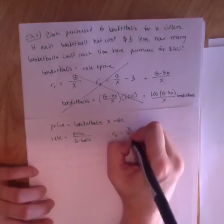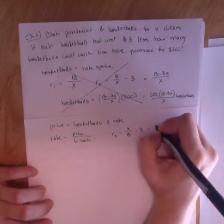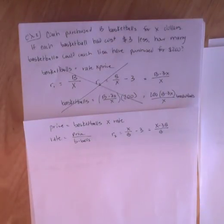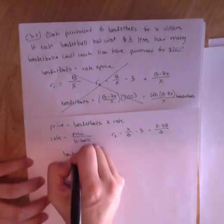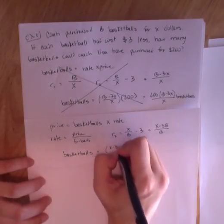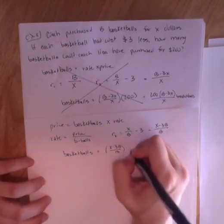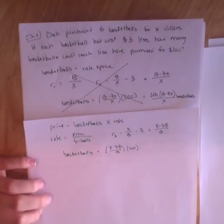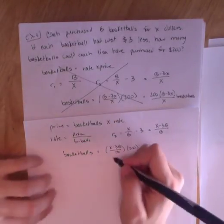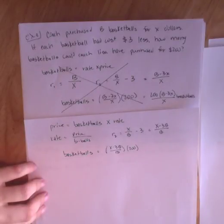Notice how I did it before. It was basketballs is rate times price. That didn't give me a price per basketball. It gave me a basketball per price. So my rate, too, should actually be X over B minus 3, which gives me X minus 3B over B.